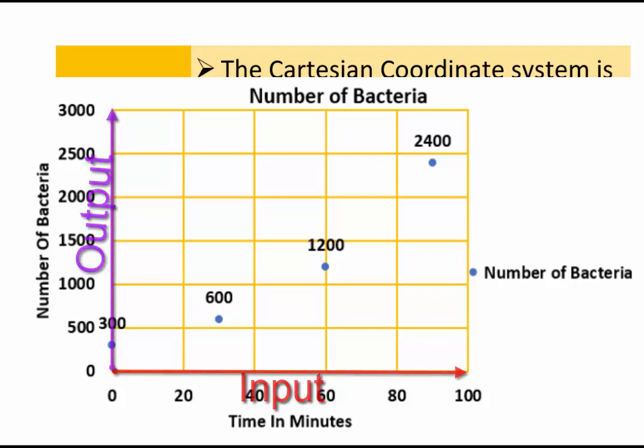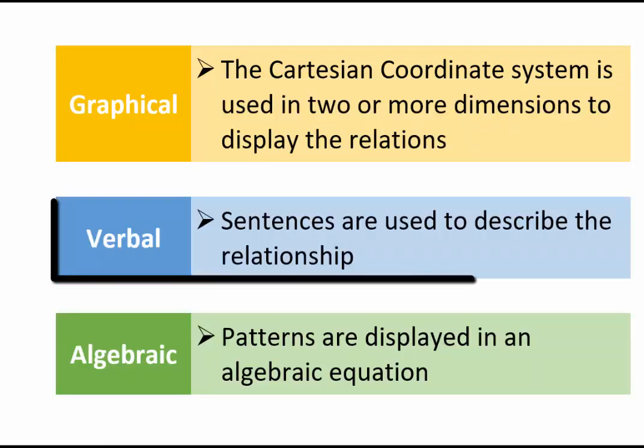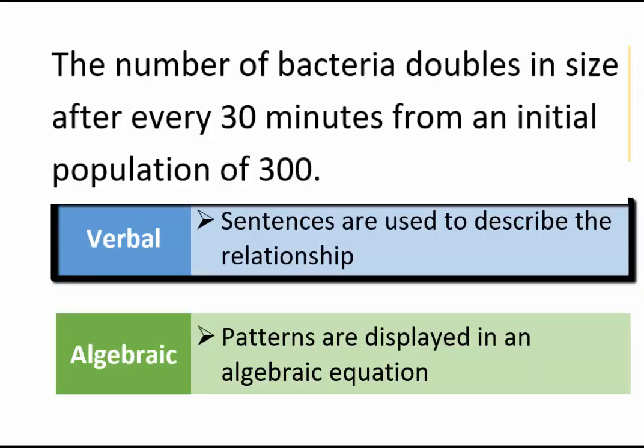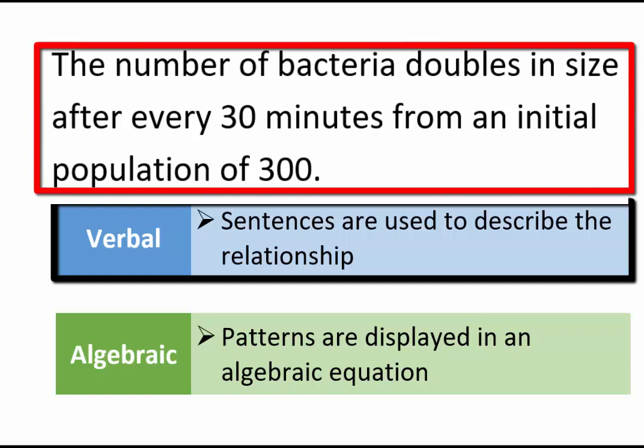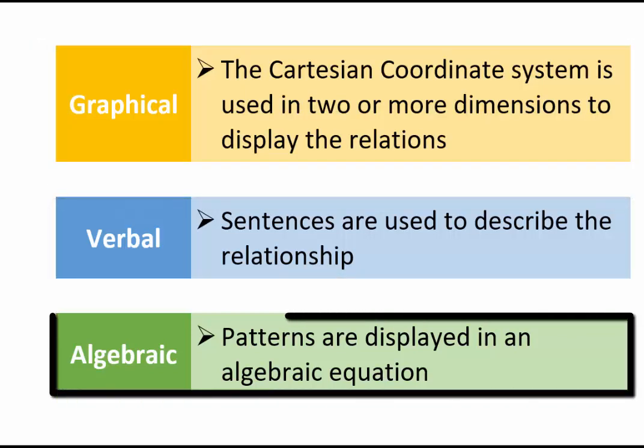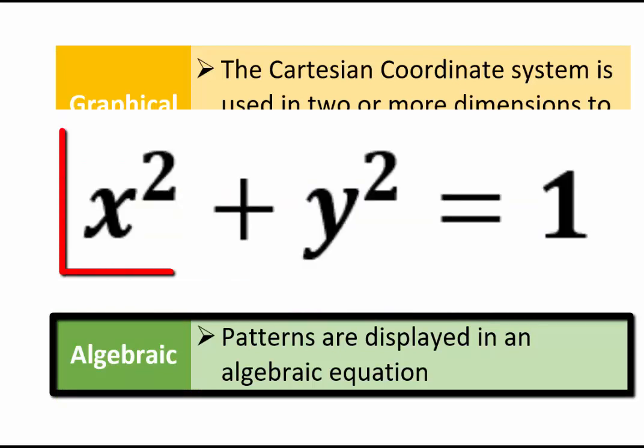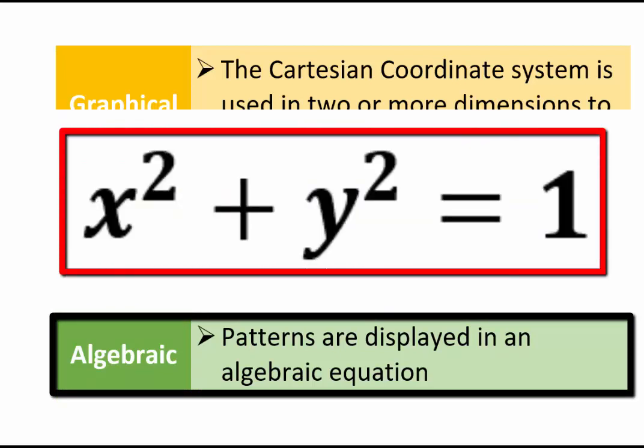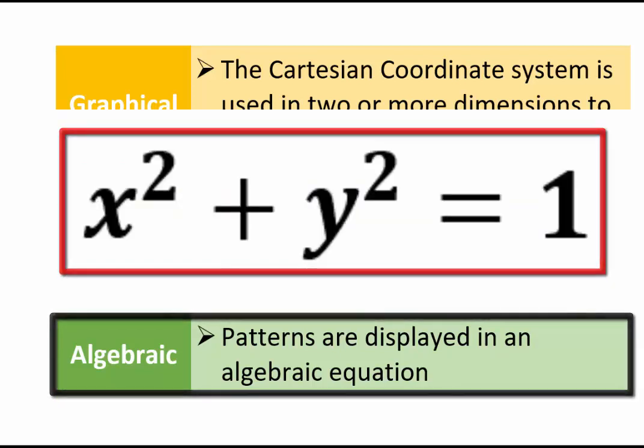Verbally, you can use sentences. For example, number of bacteria double in size after every 30 minutes from an initial population of 300. Algebraic relations, then you're representing them in form of an algebraic equation in two or more variables.